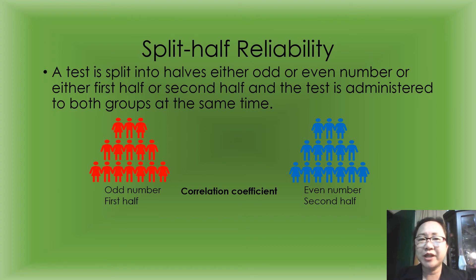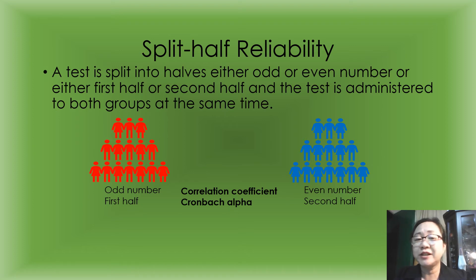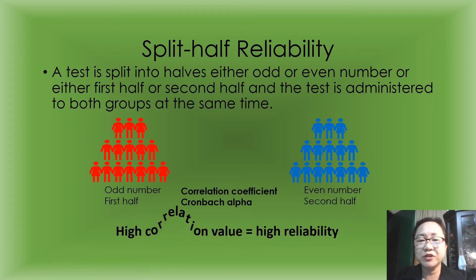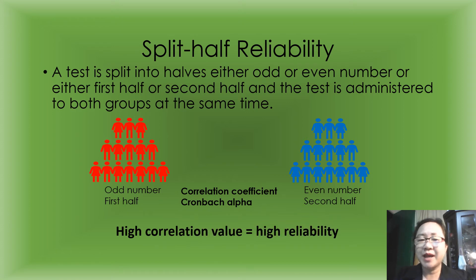Another way to identify the internal reliability of a test is through Cronbach's Alpha. I will discuss correlation coefficient and Cronbach's Alpha in my next episodes. A high correlation value would mean high reliability.